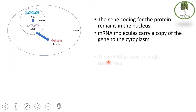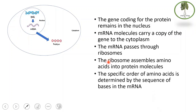The gene coding for the protein remains in the nucleus. mRNA molecules carry a copy of the gene to the cytoplasm, where mRNA passes through ribosomes. The ribosome is the machine that translates the code in the mRNA to assemble amino acids into protein molecules. The specific order of amino acids is determined by the sequence of bases in the mRNA. Any change in the gene will change the mRNA code and result in a different or faulty protein.